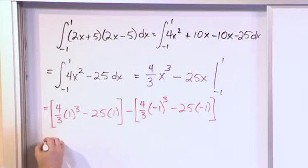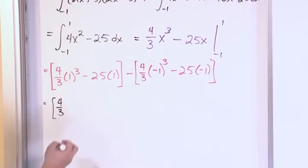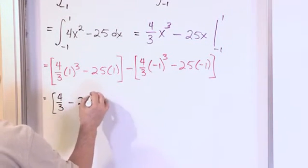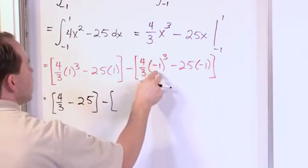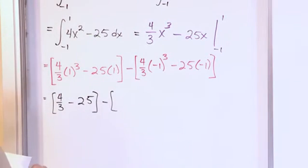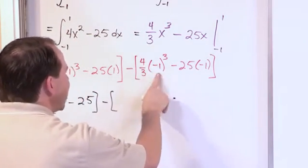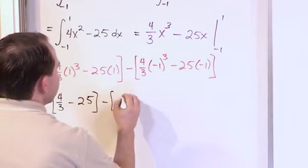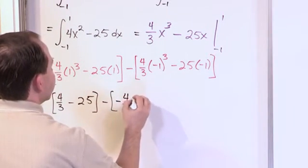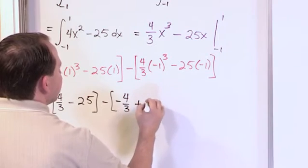All right, so what we're going to have inside of here, inside of this guy, is going to be 4 thirds. 1 cubed is 1, so we'll have minus 25 right here, minus. Now right here we know that 1 cubed is negative 1. Negative 1 times negative 1 times negative 1 should give me negative 1. So I have negative 4 thirds inside here. This guy gives me positive 25.